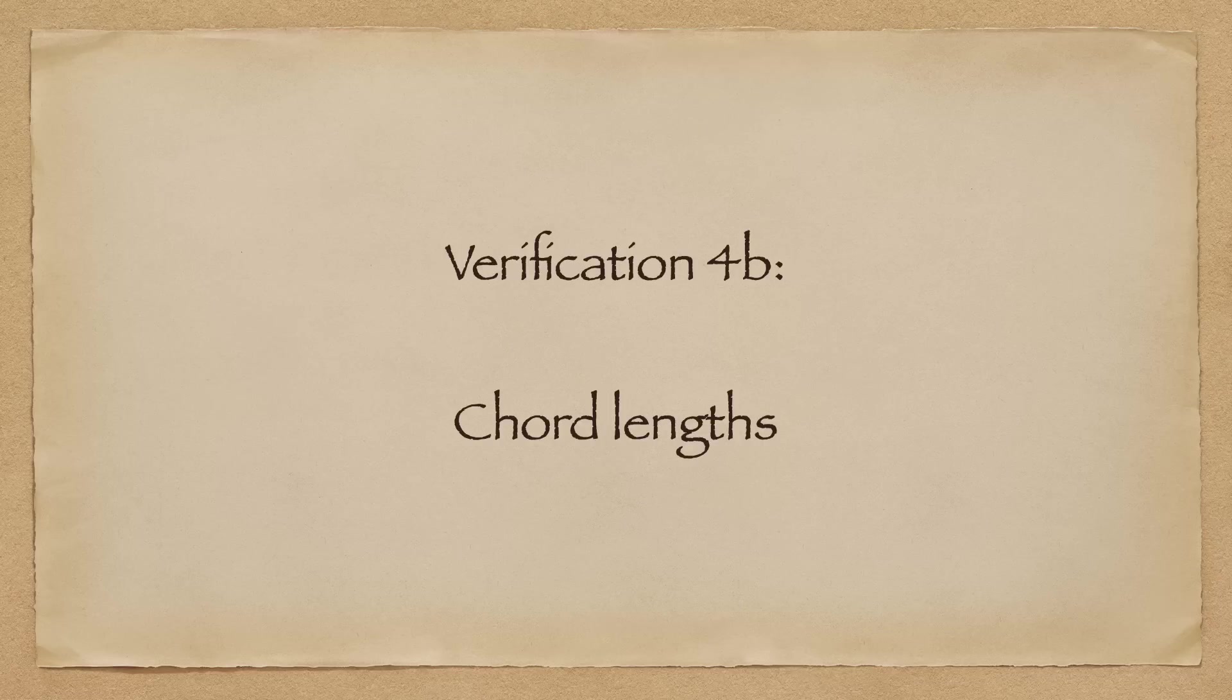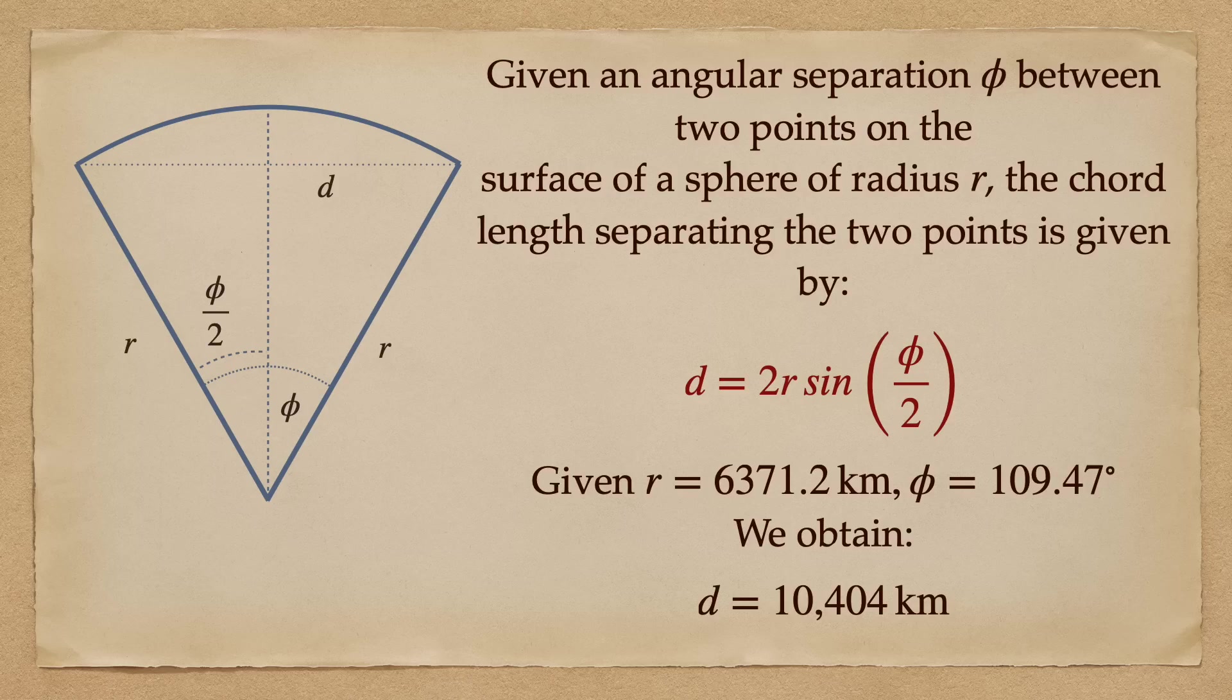Now that we have Cartesian coordinates, we can calculate Cartesian distances, but these can't be compared directly with great circle distances. Instead, the correct comparison is to compare Cartesian distances to chord lengths, which can be easily calculated using simple trigonometry. Doing this for the vertices of our tetrahedron, we see that the chord length separating them should be 10,404 kilometers.